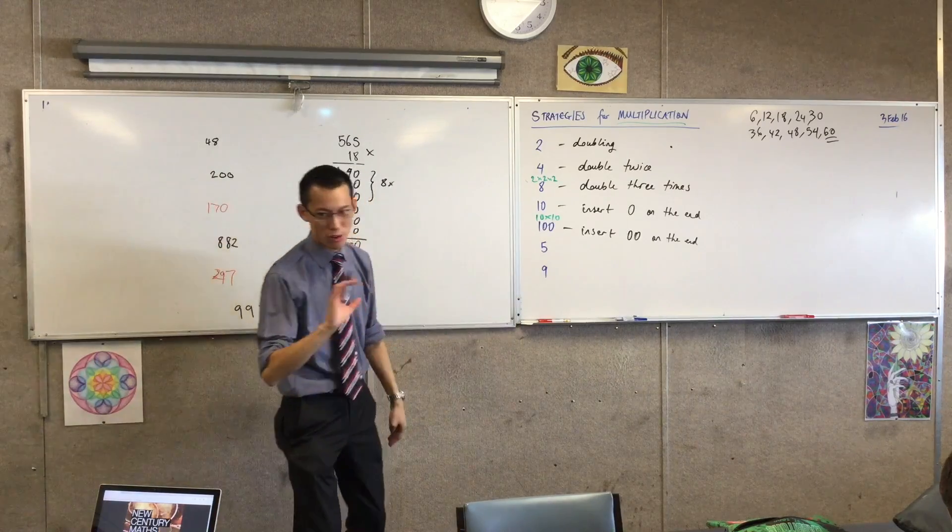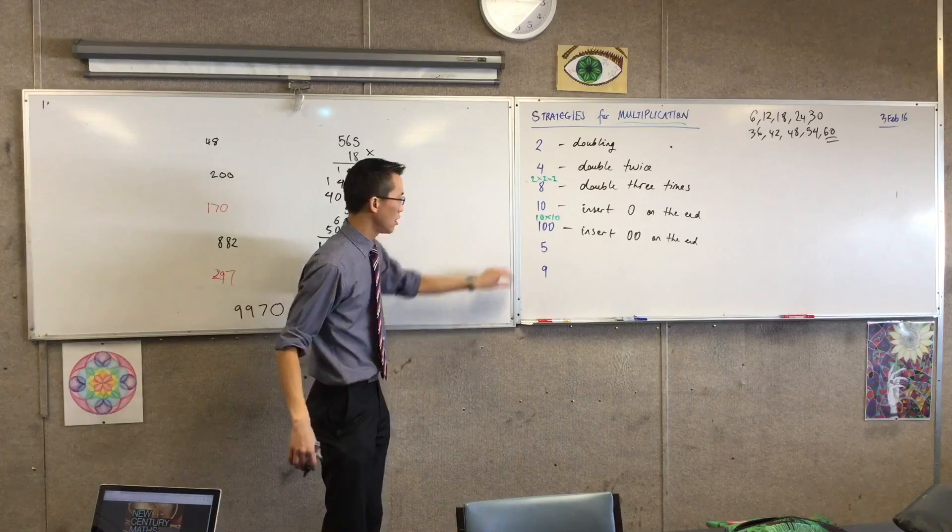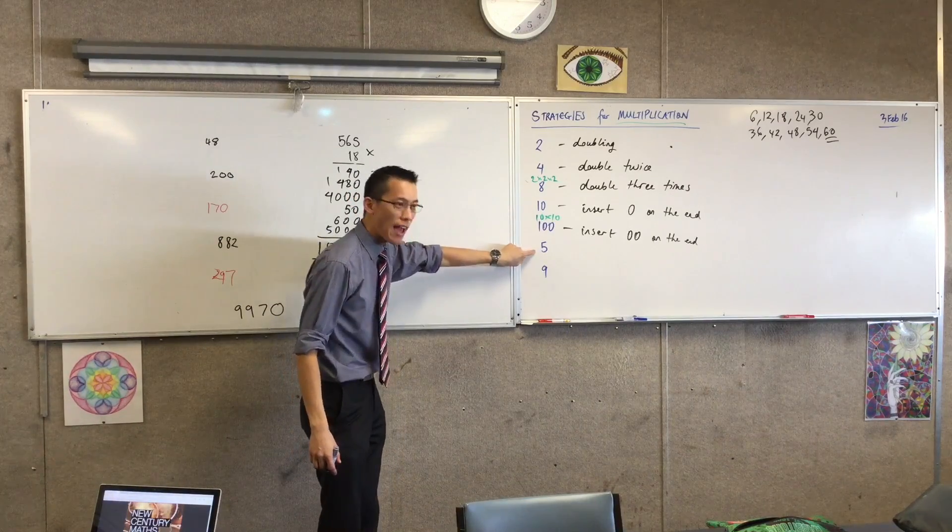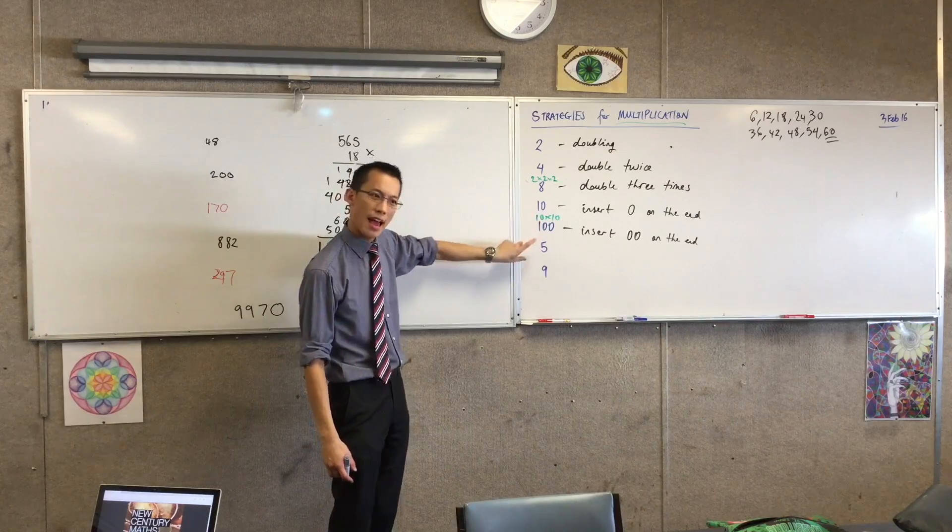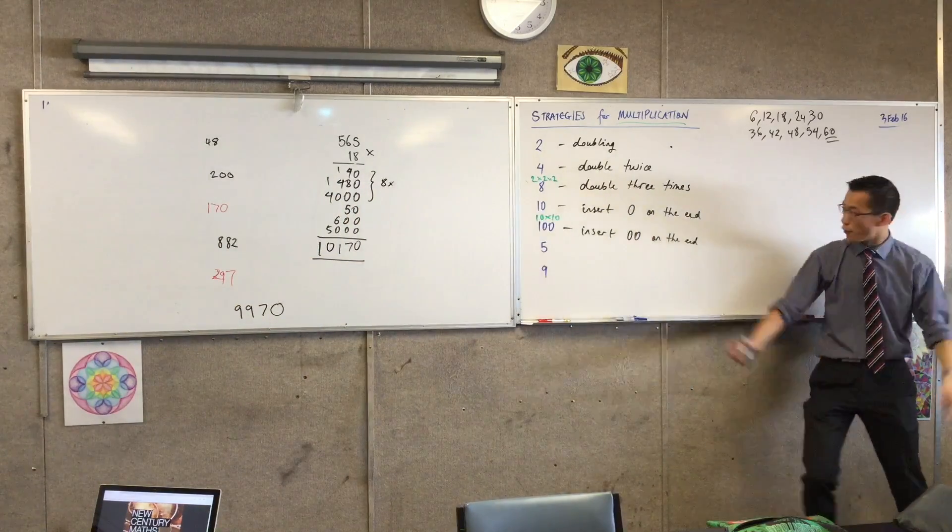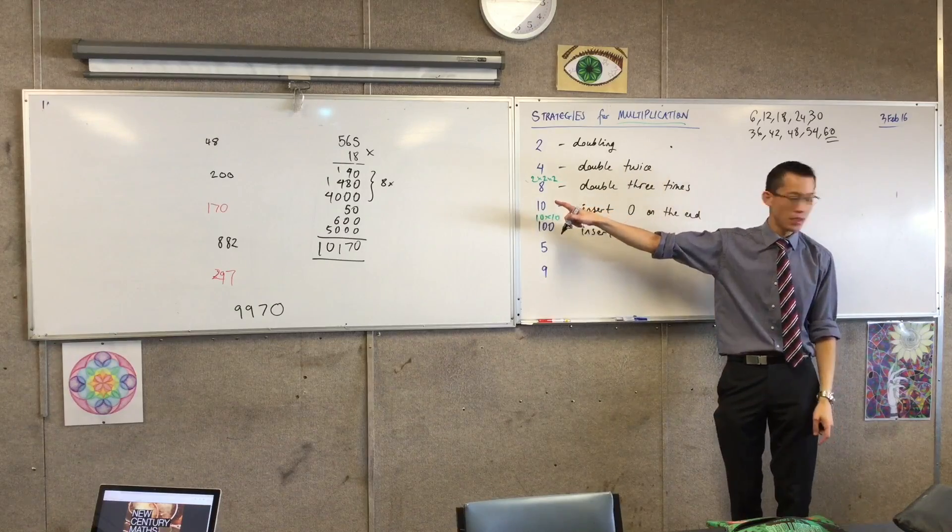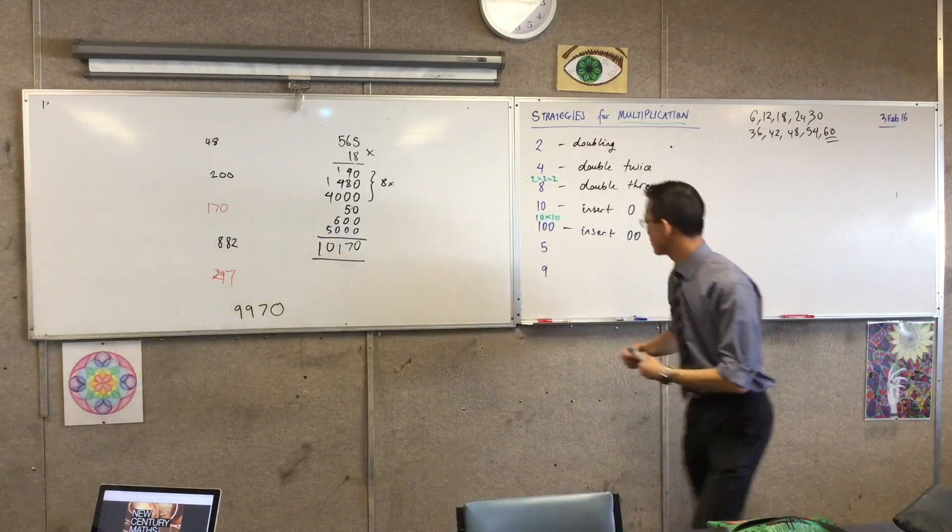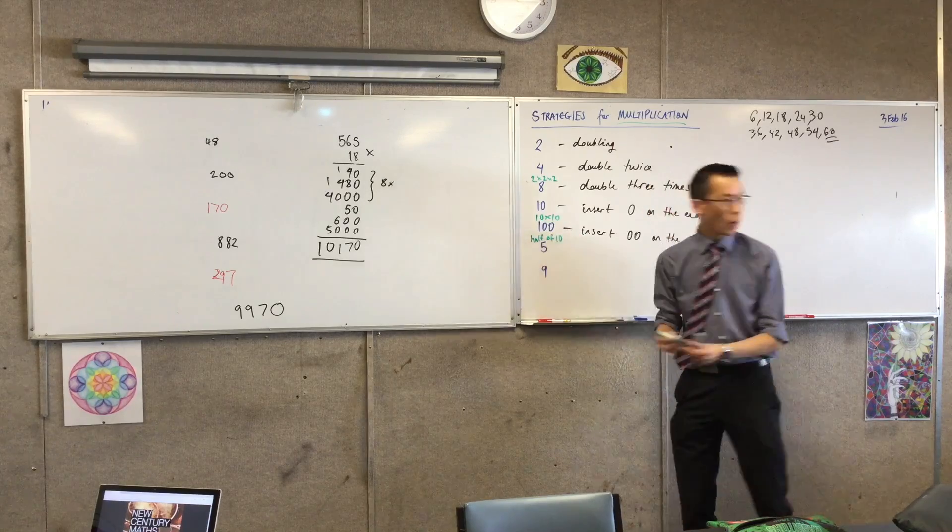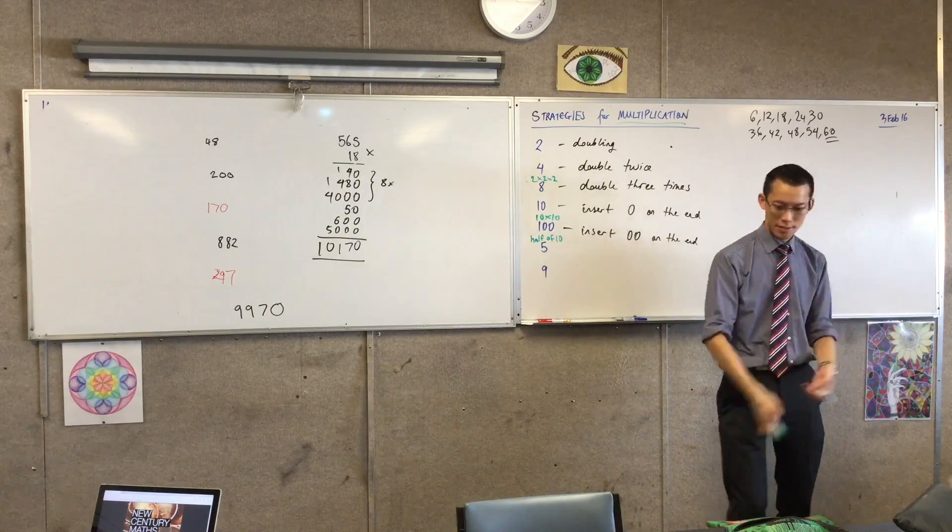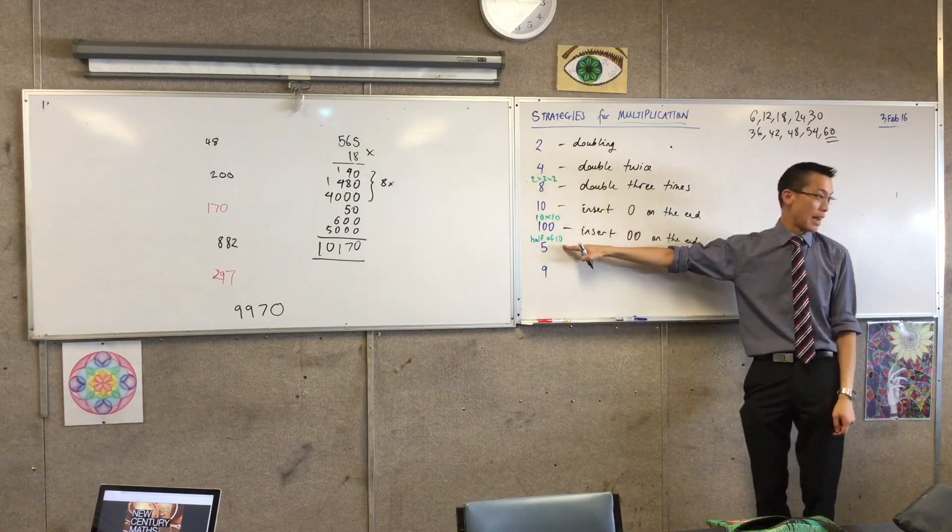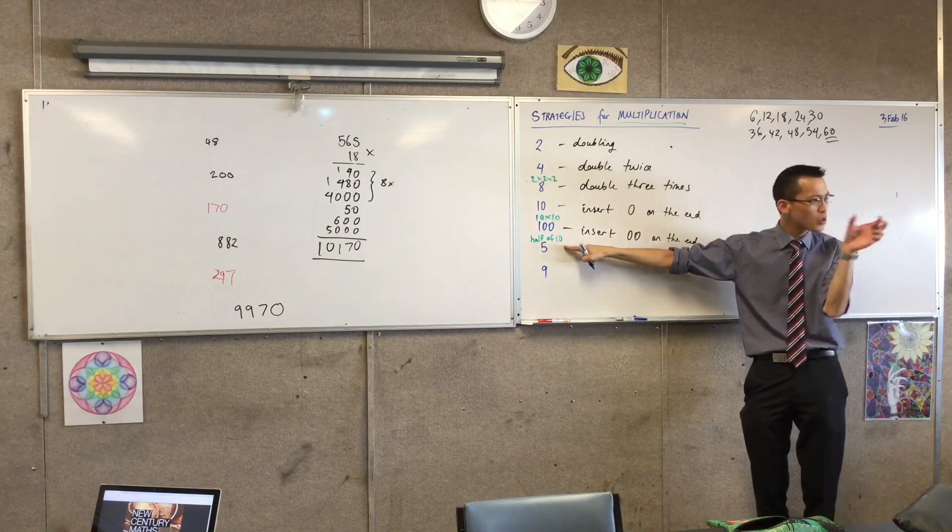Now, we're almost at the end here. 5 and 9, even though they don't look like it, the strategy, the shortcut I'm going to show you is actually in the same family as this 10 and 100 here. 5 and 10, they are related to each other. How is 5 related to 10? Yeah? Very good. 5 is exactly half of 10. So since it's half of 10, what I can do is, if I know what my number is, all I need is what's half of that number and then multiply it by 10. Does that make sense? I'm doing those two steps.